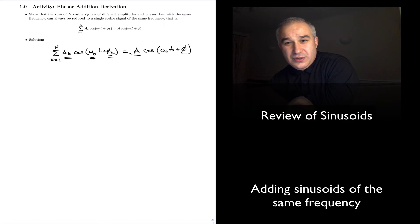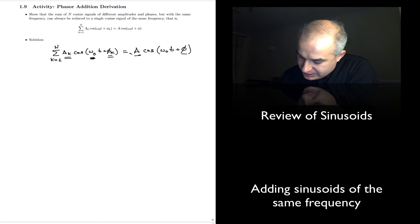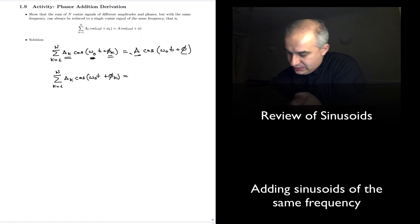Anytime that we are going to show anything, we are likely going to need to work with complex exponentials. Look at the previous video. What an example of that. So, A_k cosine of omega zero t plus phase k. If this is equal to, we are going to use our complex exponentials. Summatory, okay.